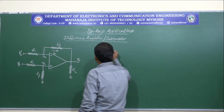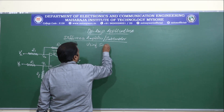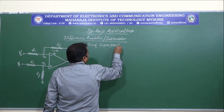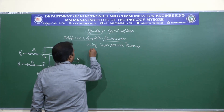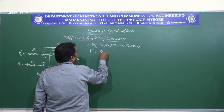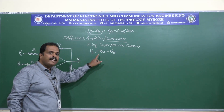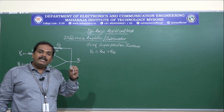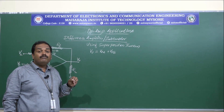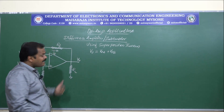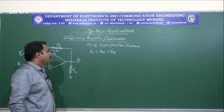Now, because we have two input sources connected to two different input terminals, we will be using the superposition theorem, which allows us to determine the outputs considering one input at a time. Using superposition theorem, we can write V0 is equal to V0A plus V0B, where V0A is the output considering VA input alone and V0B is the output considering VB input alone.